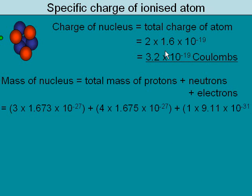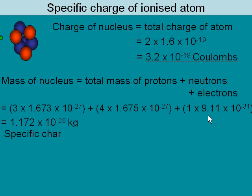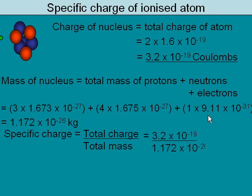The total mass of the atom is the mass of the protons, the mass of the neutrons, and the mass of the electrons. But notice, because the electron mass is so small, it hardly makes any difference to the actual mass of the atom — we can practically ignore the electrons in most cases. So the specific charge in this case is simply the total charge divided by the total mass.